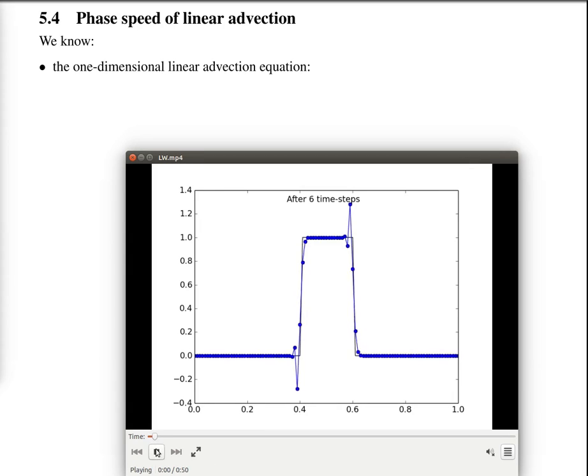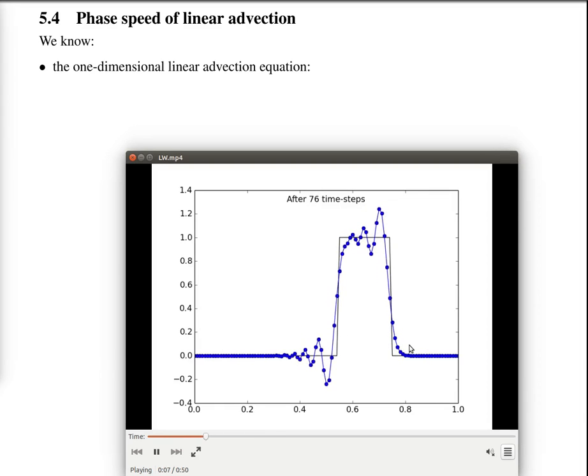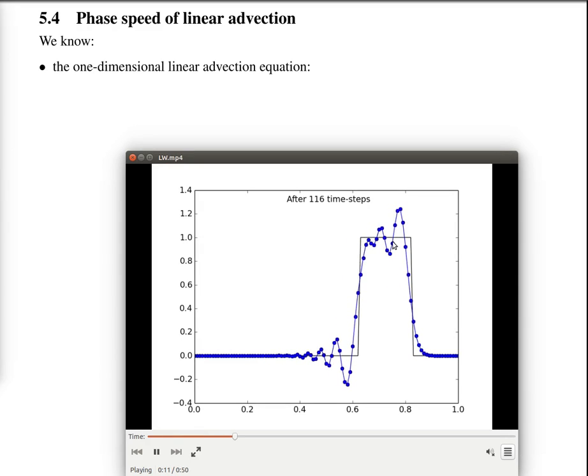For example, like this video here. The true solution is the black line being advected to the right, and a numerical scheme is this blue line. There are dispersion errors generating these oscillations.